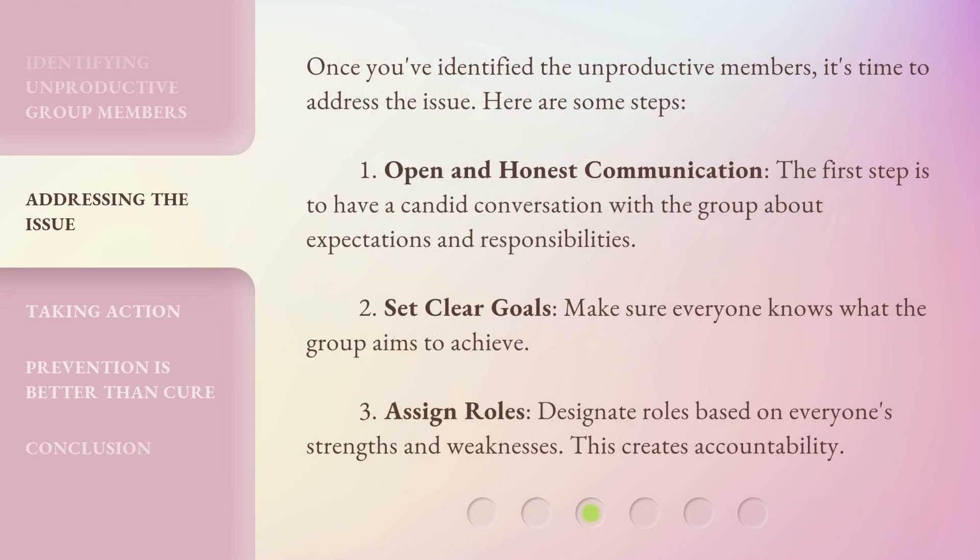Once you've identified the unproductive members, it's time to address the issue. Here are some steps: 1. Open and honest communication — the first step is to have a candid conversation with the group about expectations and responsibilities. 2. Set clear goals — make sure everyone knows what the group aims to achieve. 3. Assign roles — designate roles based on everyone's strengths and weaknesses. This creates accountability.